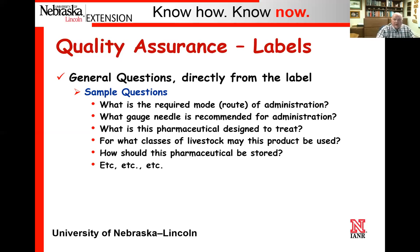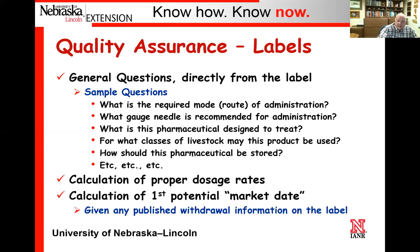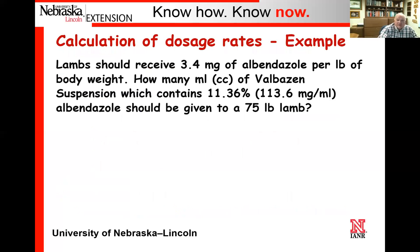It's going to be important for them to be able to calculate a proper dosage rate. Some pharmaceuticals will tell them exactly how much to give, but oftentimes they'll say we want so many mils per 100 pounds of body weight. They need to be able to calculate a proper dosage rate for a given size lamb or sheep, and then be able to calculate that first potential market date given any published withdrawal information present on a label. Give us an idea of a possible calculation — some dosage rates are pretty easy to calculate, others are a little bit more complicated.